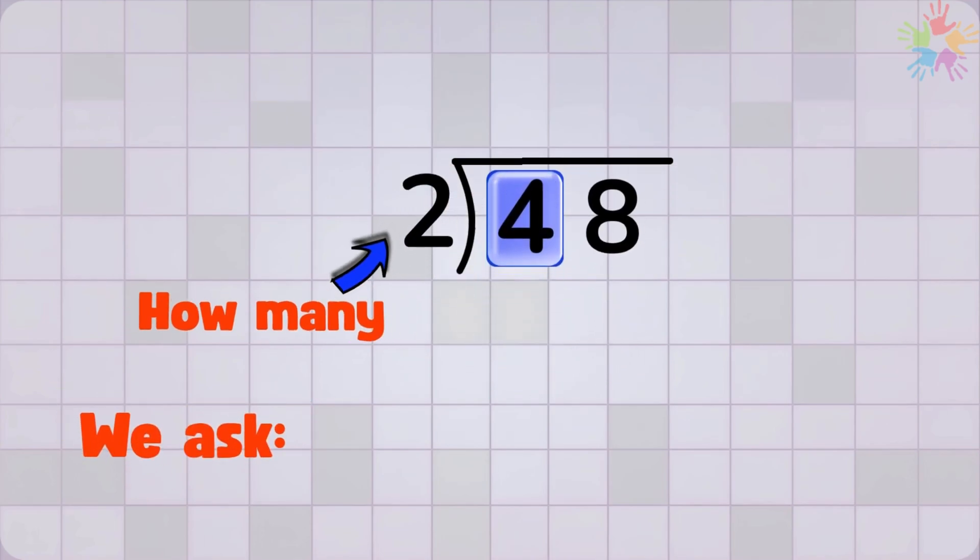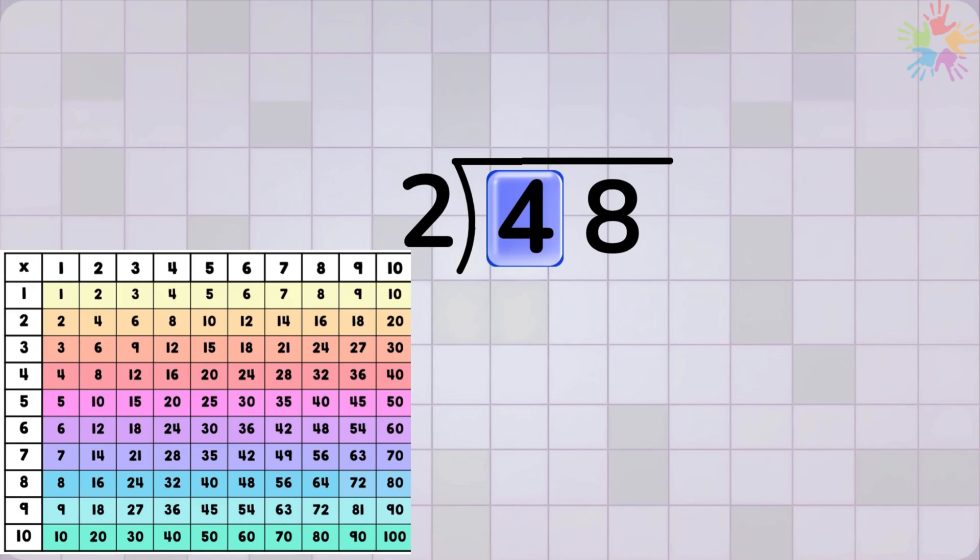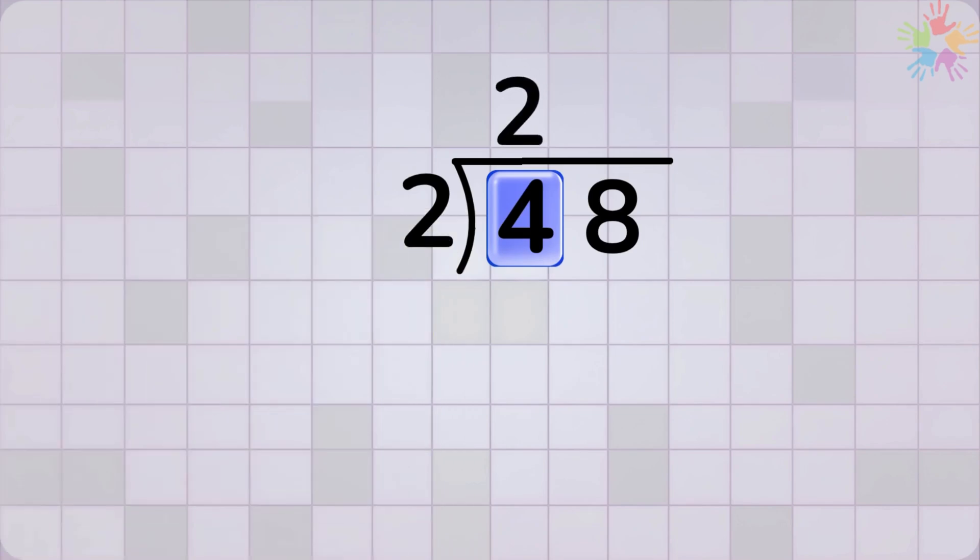We ask, how many times does 2 go into 4? Well, if you know your multiplication fact, then you know exactly that. The answer is 2. Because 2 times 2 equals 4. We write the number 2 at the top.